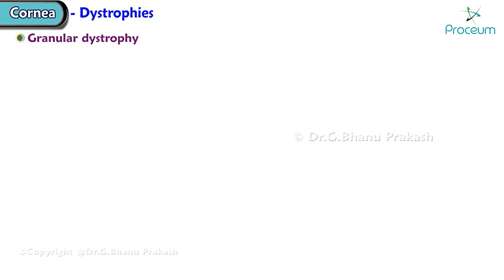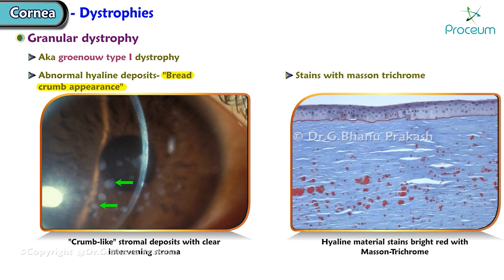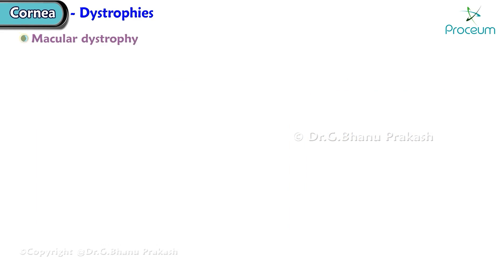Granular dystrophy, also known as Groenouw type 1 dystrophy, is characterized by abnormal hyaline deposits giving a breadcrumb appearance. It stains with Masson's trichrome.